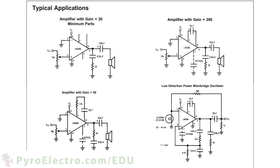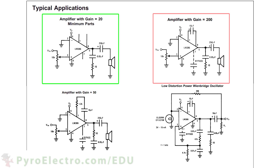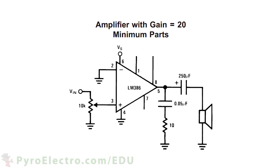The top two typical applications offer this to us, with one producing an audio amplification gain of 20 and the other 200. Both of these circuits will work for us, but let's choose the gain equals 20 circuit since it is the easiest to construct. Since the analog parts kit doesn't have a few of the parts seen in the circuit, we'll modify it so we can build it up and still get an amplification gain of 20.